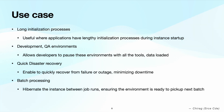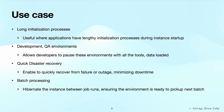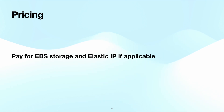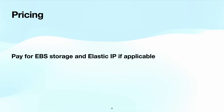Another use case is batch processing. In scenarios where you run batch processing jobs on an EC2 instance, hibernation can be beneficial — you can hibernate the instance between job runs, ensuring that the job's progress and results are retained and the instance is ready for the next batch job. Regarding pricing, it is straightforward: you will only pay for the EBS storage attached to the instance and the elastic IP address if applicable. You will not be charged for instance usage for a hibernated instance when it is in stop state.